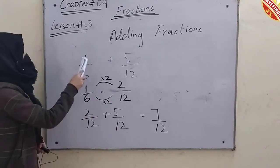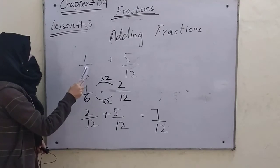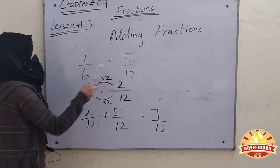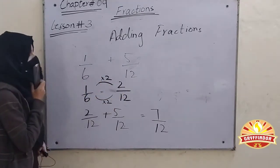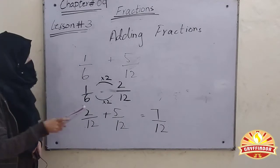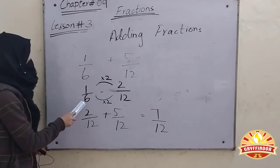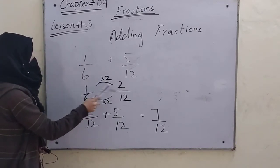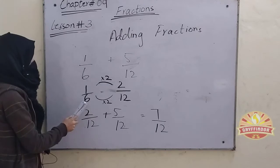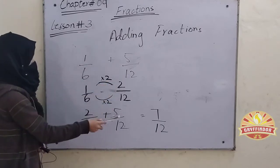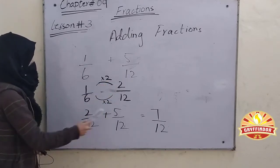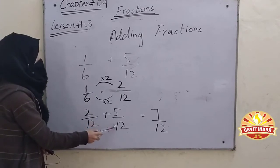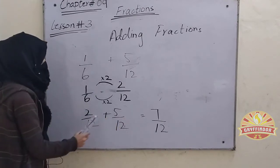We have to add the fractions. We have to add 1 by 6 plus 5. So, we have to add 1 by 6. We have to multiply 1 by 6 — this is equal to 2, and 6 is equal to 2. Now, if we add 2 by 12 plus 5 by 12.